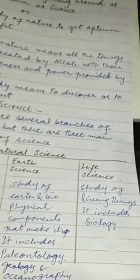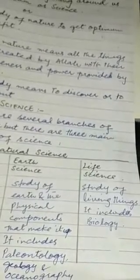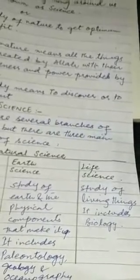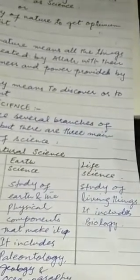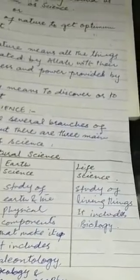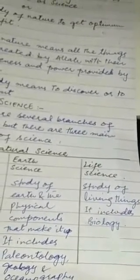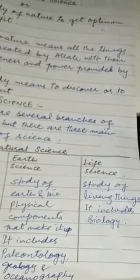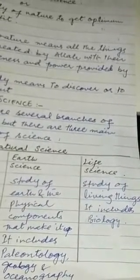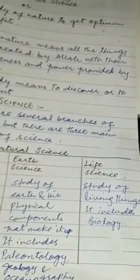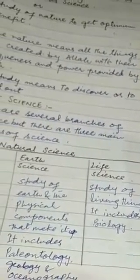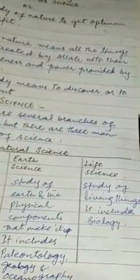Third branch of science is life science which is the study of living things. It includes definitely biology. So I come to the end of this topic which is we asking about the laws of nature, solar system and the universe.